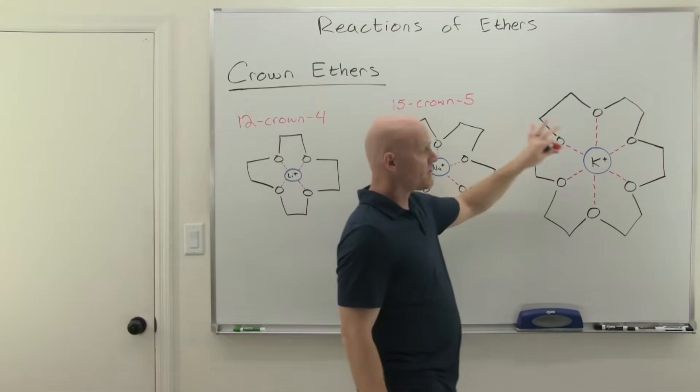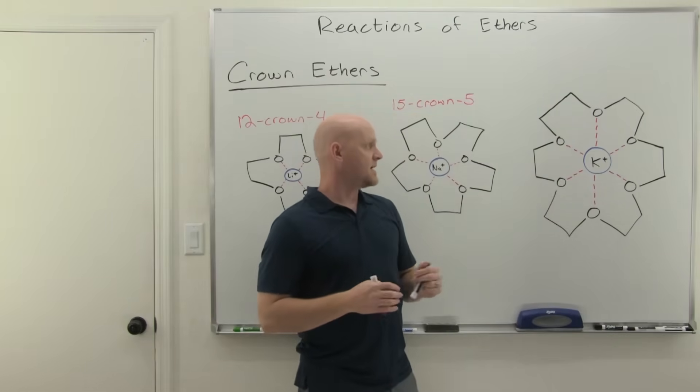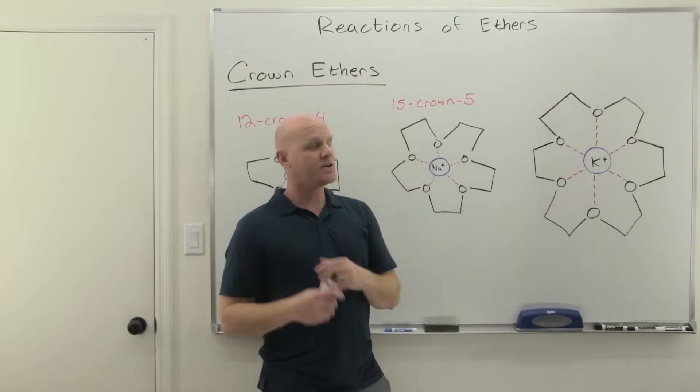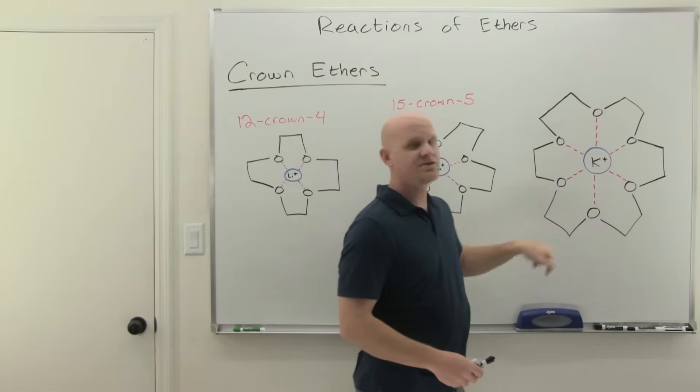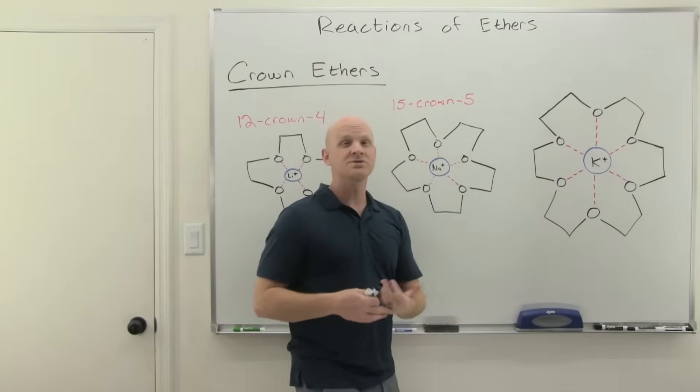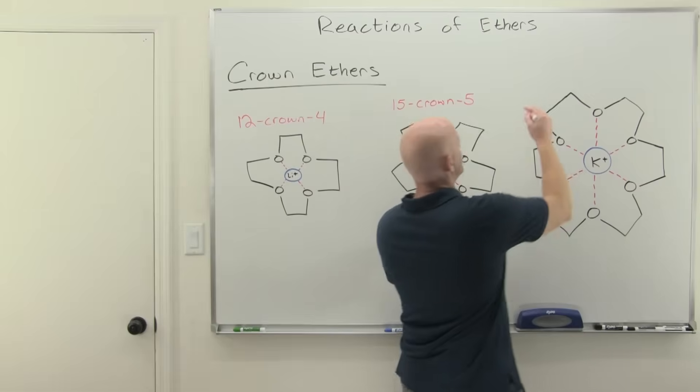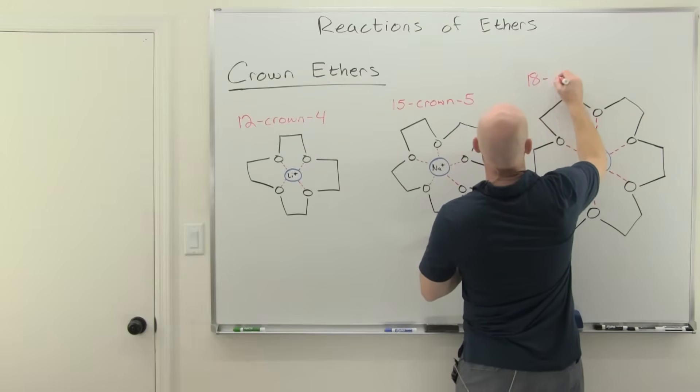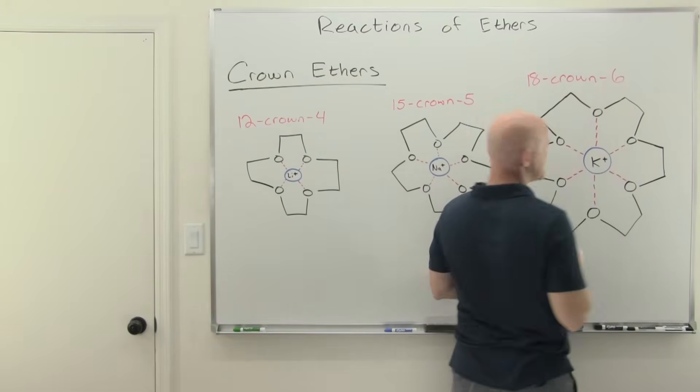Finally, the largest one we're going to look at. To solvate potassium, you've got to get a little bigger yet, so now we've got six oxygen atoms. That means we're going to have 12 carbons, or 18 atoms total, and so the name's going to be 18-crown-6.